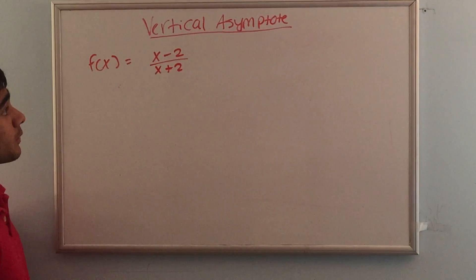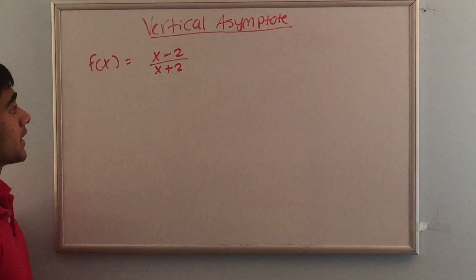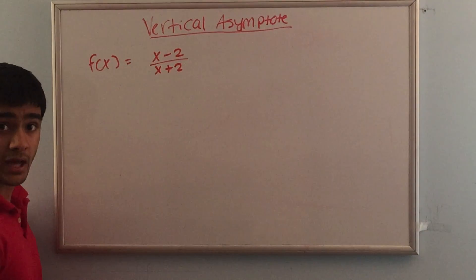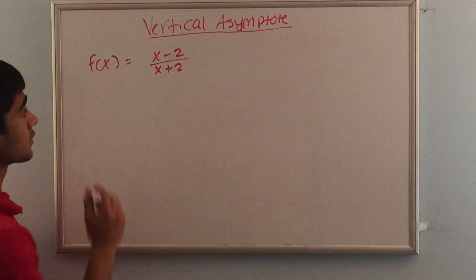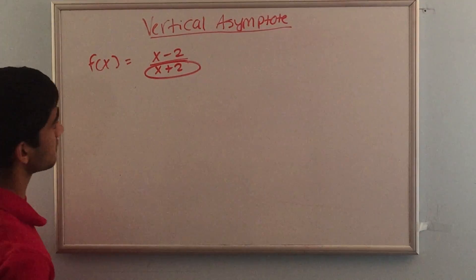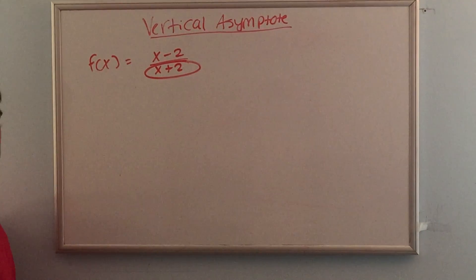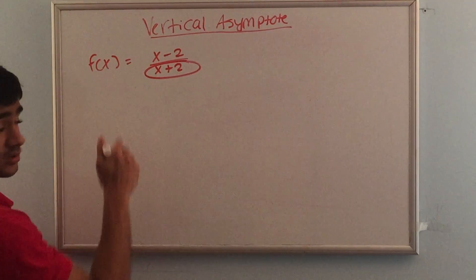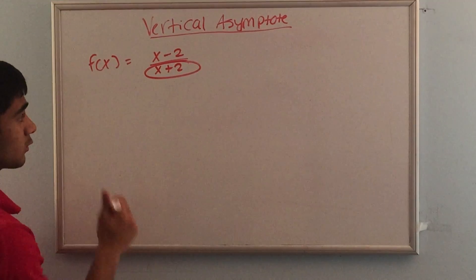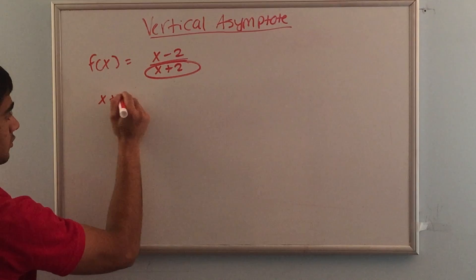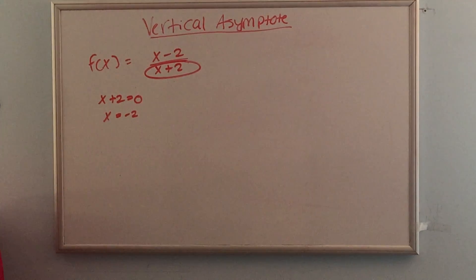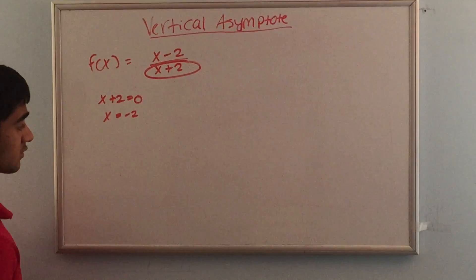Normally we can determine the different types of asymptotes a function has based on its equation, and the easiest one to figure out is the vertical asymptote. The trick to find the vertical asymptote is to look at the denominator of the function. For example, for f(x) = (x − 2) / (x + 2), we focus on the denominator, set it equal to zero: x + 2 = 0, so x = −2. That means this function has a vertical asymptote at x = −2.